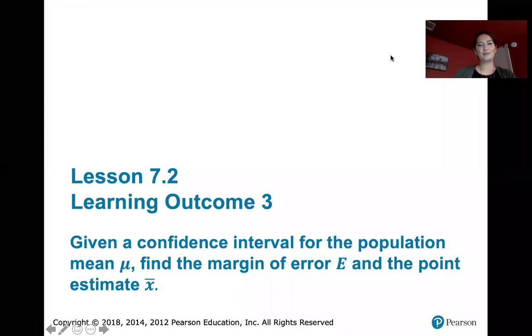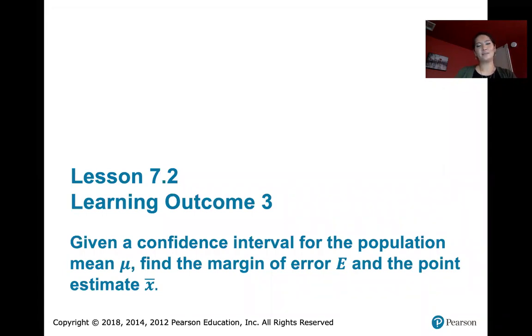In this video we discuss learning outcome number three of Lesson 7.2. Here we're talking about how we find the margin of error and the point estimate x̄ for our population mean if we're given a confidence interval for the population mean.